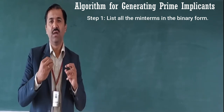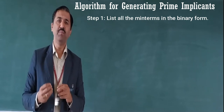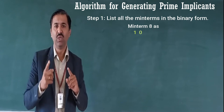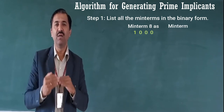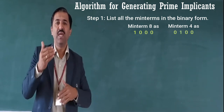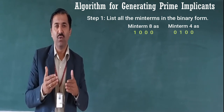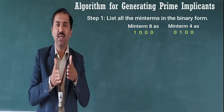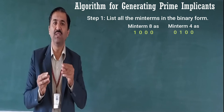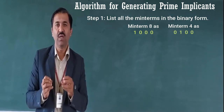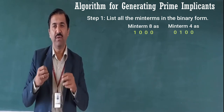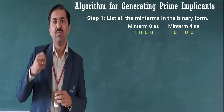For example, if we have minterm 8, we are going to represent it as 1 0 0 0. If we have minterm 4, we represent it as 0 1 0 0. If we take minterm 5, we represent it as 0 1 0 1. Hope you remember the binary representation of these decimal numbers. Since they are part of this function, we term them as minterms. After listing all the minterms in binary form, we move to the next step.